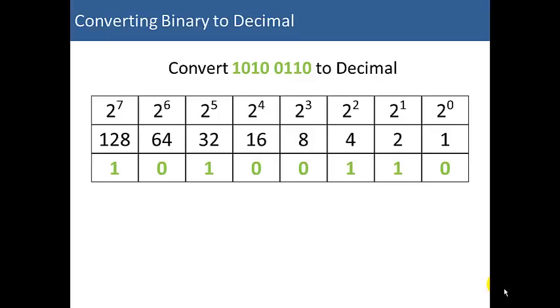Below that, we're going to put our number. Now, basically what our number means is 1 times 128, plus 0 times 64, plus 1 times 32, plus 0 times 16, and so on.